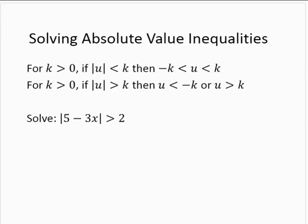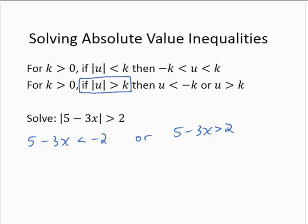The absolute value of 5 minus 3x is greater than 2. So this is of the second form — the absolute value of u is greater than k. We can rewrite this as two inequalities: 5 minus 3x is less than negative 2, or 5 minus 3x is greater than 2.